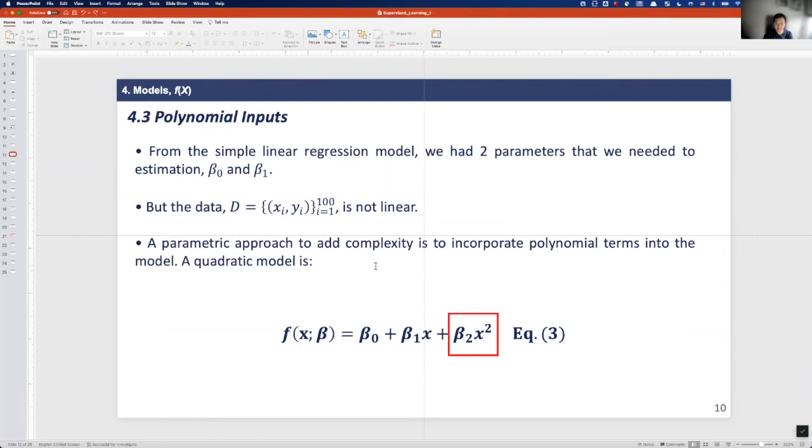A parametric approach to add complexity is to incorporate polynomial terms into the model. So a quadratic model is shown with equation 3 here. We can add polynomial terms to make the model better. And let's learn how we can obtain these three parameters, beta 0, beta 1, beta 2, and how much we can get from this complex model.